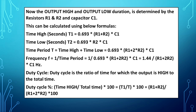Time high in seconds: T1 = 0.693 × (R1 + R2) × C1. Time low in seconds: T2 = 0.693 × R2 × C1. Time period: T = T1 + T2 = 0.693 × (R1 + 2×R2) × C1. Frequency: F = 1/T = 1 / (0.693 × (R1 + 2×R2) × C1), which equals 1.44 / ((R1 + 2×R2) × C1) Hz.